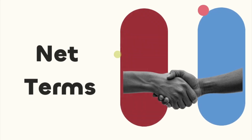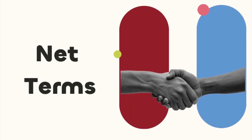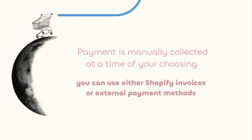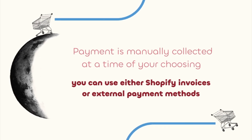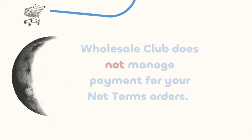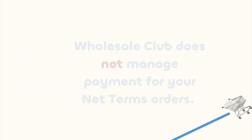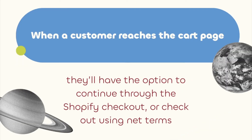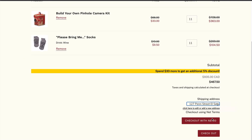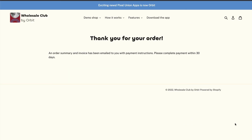Using the Net Terms feature, you can allow certain wholesale customers to place orders bypassing Shopify's checkout and pay for their order at a later date by adding the Net Terms tag to their account. This feature is included in the Wholesale Club professional plan. The order will be created in your Shopify admin and payment is manually collected at the time of your choosing using either Shopify invoices or an external payment method. When a customer reaches the cart page, they'll have the option to continue through Shopify checkout or checkout using Net Terms. If they select Net Terms, an unpaid order is added to your Shopify admin and the customer is sent to a customizable Net Terms Thank You page.